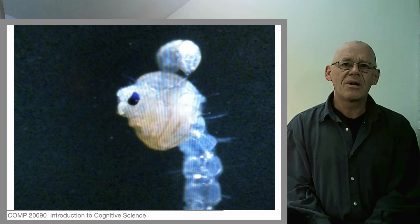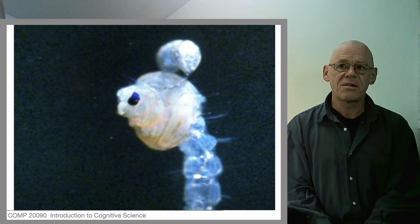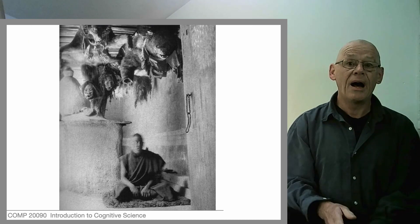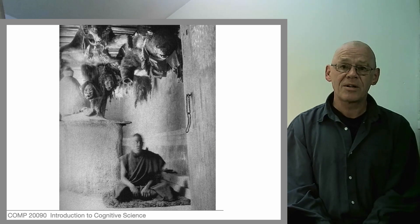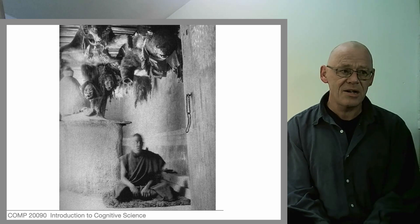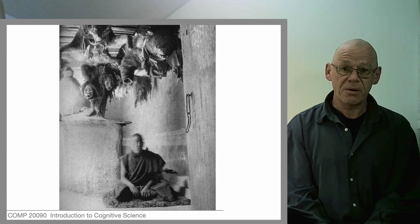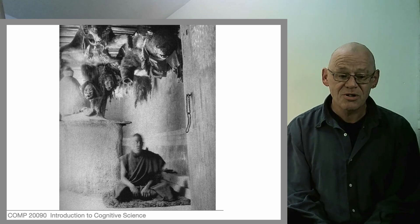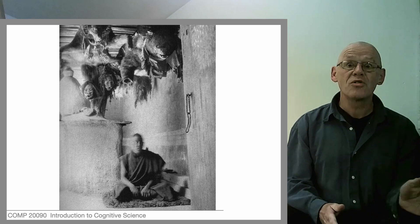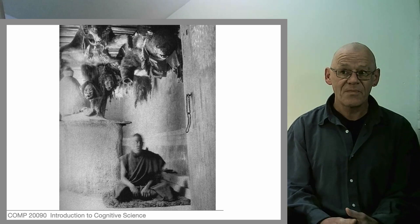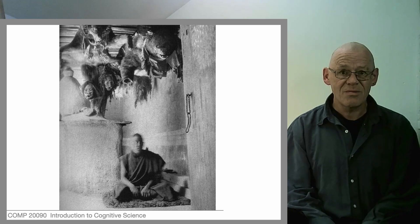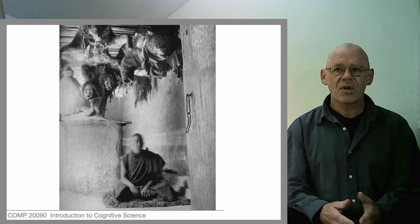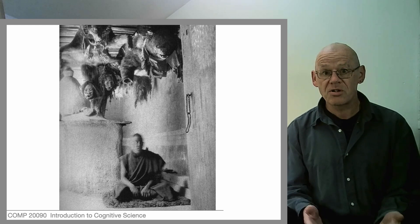Maybe the way you think about consciousness is going to be massively influenced by your cultural background. We'll meet some approaches to consciousness that come from the contemplative traditions — various forms of yoga and meditation. This is a tantric monk meditating in a very hostile environment filled with heads and demons. Maybe he knows more about consciousness than we do. But we're not from that environment, and so the way we think about consciousness is going to be determined by those who've discussed the matter before.